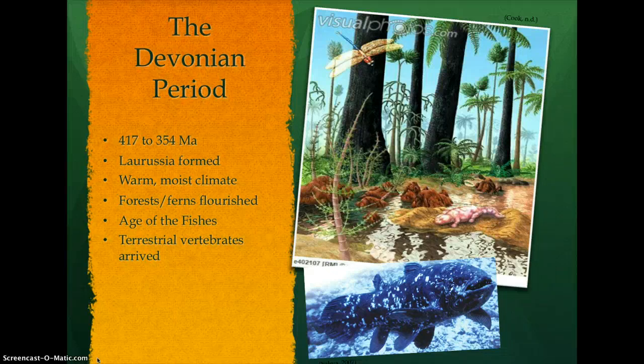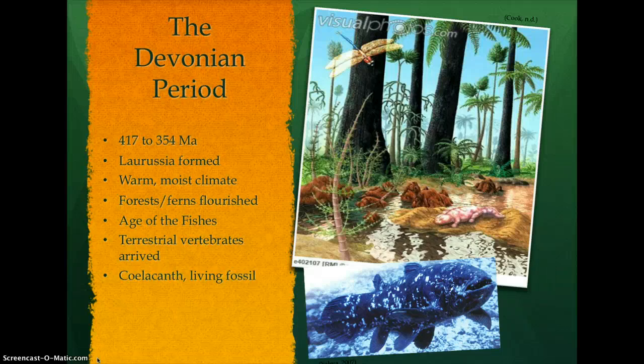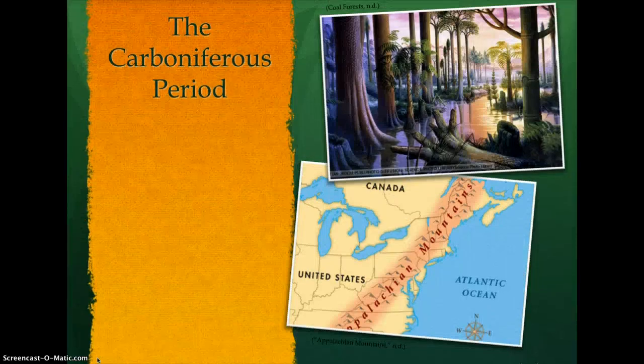Most importantly, the first truly terrestrial vertebrates, descendants of lobe-finned fishes, developed during the late Devonian period. Fish similar to the coelacanth depicted here gave rise to all four-limbed land vertebrates, including dinosaurs and animals.